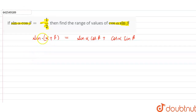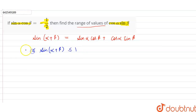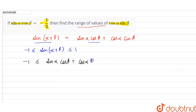So, we can say that it is given we have to find the range of the values of cos alpha sin beta. We know that the range of sin(alpha plus beta) is less than or equal to 1 but greater than or equal to minus 1. This is the range. So, accordingly, the range of sin alpha cos beta plus cos alpha sin beta will be greater than or equal to minus 1 and less than or equal to 1.